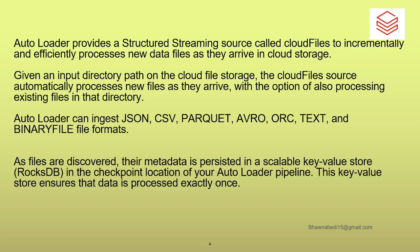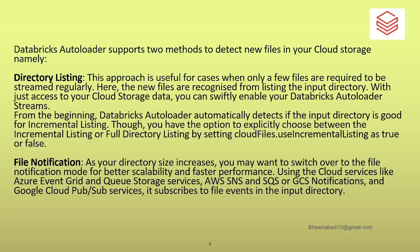Whenever you have new files arriving in your storage account, you also have the option to process files already present in that directory. AutoLoader can ingest JSON, CSV, Parquet, Avro, ORC, text, and binary file formats - so even images can be processed. AutoLoader also maintains a checkpoint that tracks what data it has already read, stored as a key-value store at a checkpoint location, ensuring your data is processed only once.